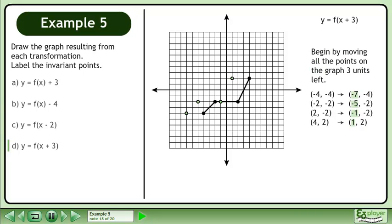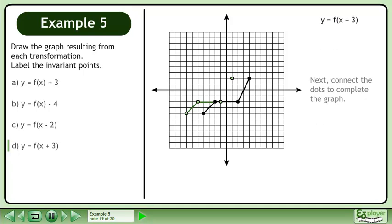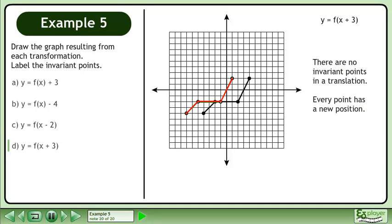Begin by moving all the points on the graph 3 units left. Next, connect the dots to complete the graph. There are no invariant points in a translation — every point has a new position.